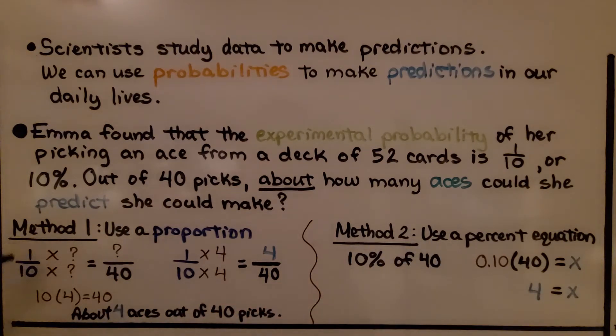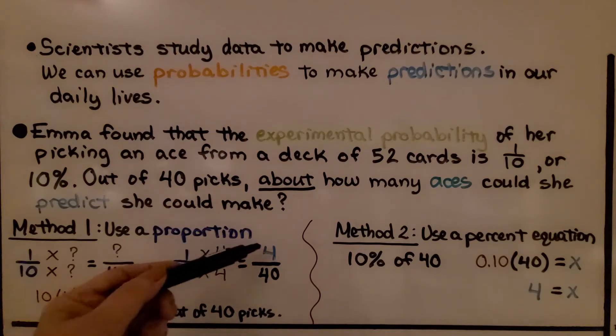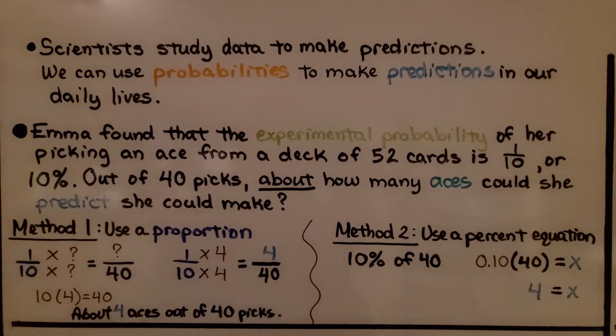We know 1/10 of the time she picks an ace, so we need to know out of 40 picks. We need to find 1/10 of 40. We think 10 times some number is equal to 40. Well, 10 times 4, so we know that's a 4. We need to multiply the numerator by the same thing. We get 1 times 4, we get 4/40. That means about 4 aces out of 40 picks.